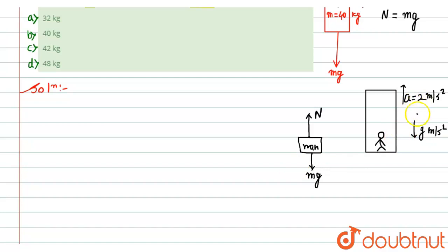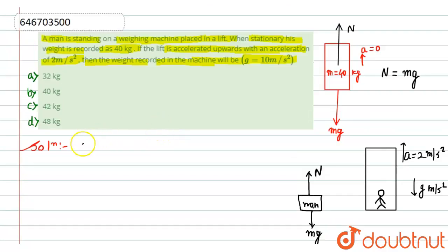we can write down here the equation as N minus mg, this would become equal to the mass into acceleration, that is ma.